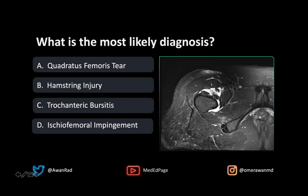If you take a look here, this is the femur, and this is the lesser trochanter. This is the inferior pubic ramus. These two tendons are the hamstring tendons — the more anterolateral one is the semimembranosus, and the more posteromedial one is the conjoint tendon of the semitendinosus and biceps femoris. We have a little bit of fluid in the joint capsule. The dominant finding is intramuscular edema within the quadratus femoris muscle.